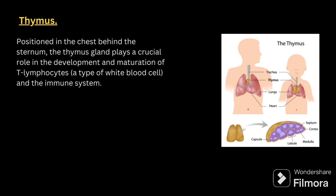Next, we will be talking about the thymus. The thymus is positioned in the chest area behind the sternum. The thymus gland plays a crucial role in the development and maturation of T lymphocytes, which are a type of white blood cell in the immune system. The main things to remember: it is present in the chest area and its main function is the development and maturation of T lymphocytes.